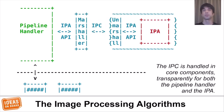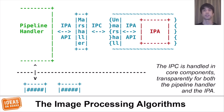LibCamera comes with a mechanism for process isolation to run the IPA in a separate process. The platform integrator can decide that if they don't want to run untrusted binary code with full access to the system, they can enable this isolation. Different sandboxing mechanisms can be implemented on top of this isolation. We have an IPC mechanism for communication between the pipeline handler and the isolated IPA, such that neither side knows nor cares that the IPA is isolated.